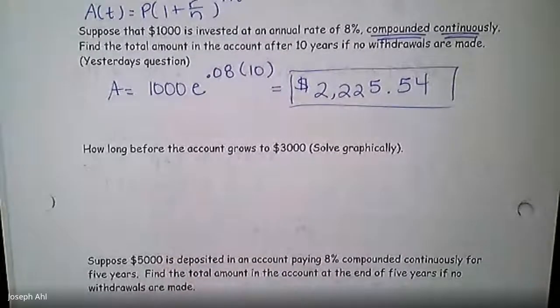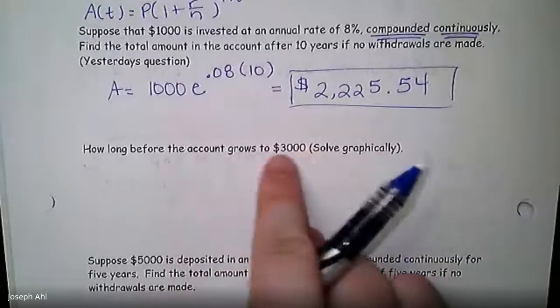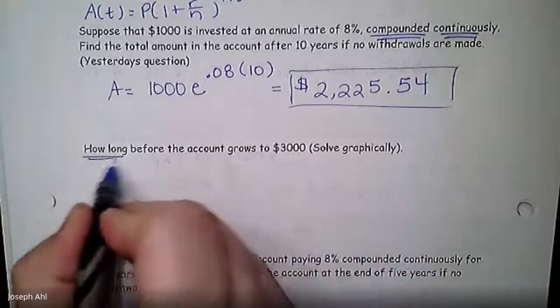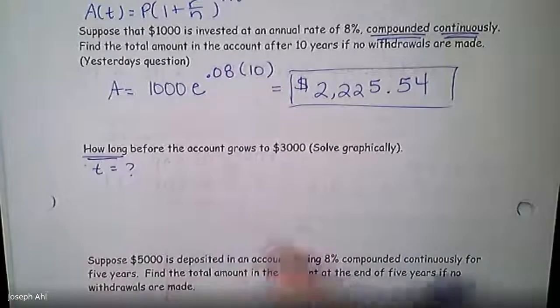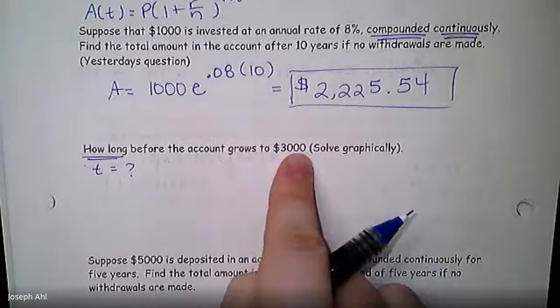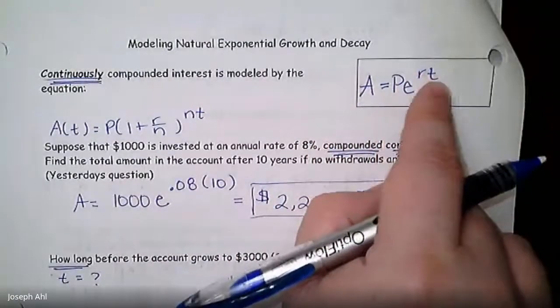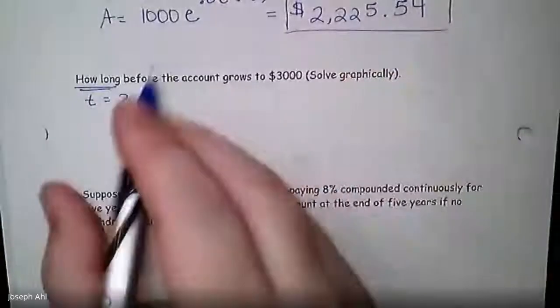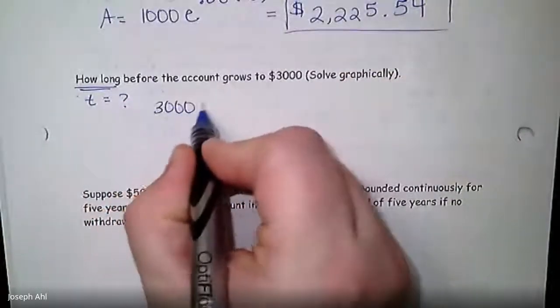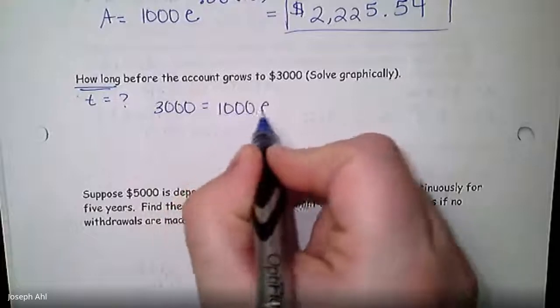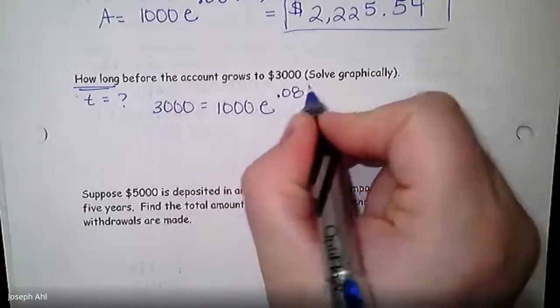Find the total amount in the account after 10 years if no withdrawals are made. So the amount after 10 years would be the initial investment of 1,000 times e to the rate, just make sure you do that, it's a decimal 0.08 times 10. So the amount in the account is, let's see if we can plug this in pretty easily here, 1,000.